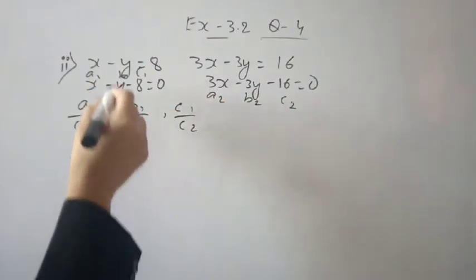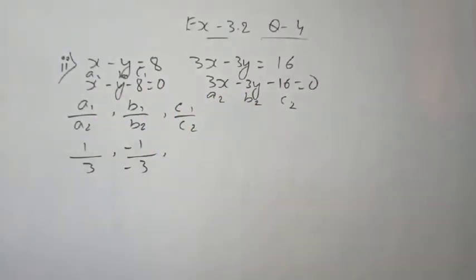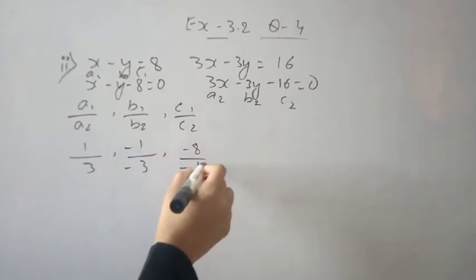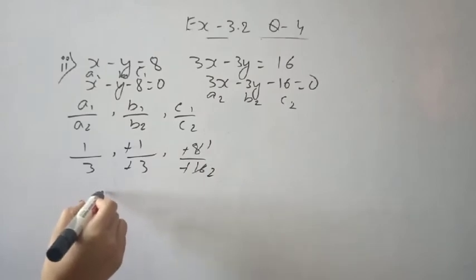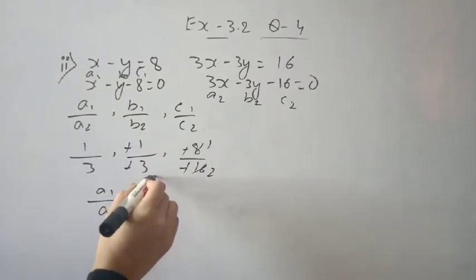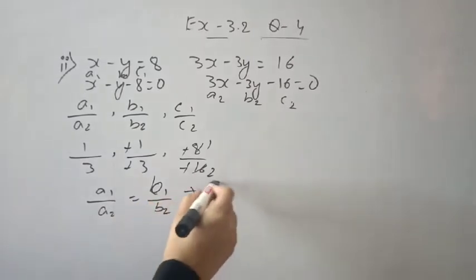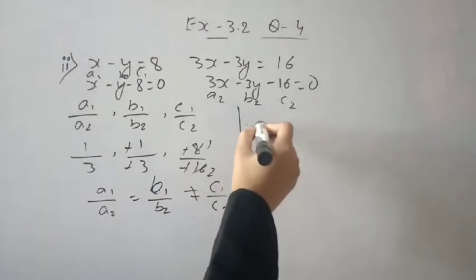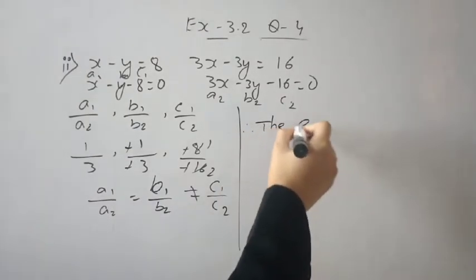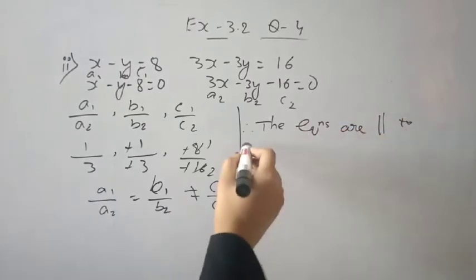So a1 by a2 is 1 by 3, b1 by b2 is minus 1 by minus 3, and c1 by c2 is minus 8 by minus 16. So a1 by a2 is equal to b1 by b2, but is not equal to c1 by c2. The first two ratios are equal but the third is not.